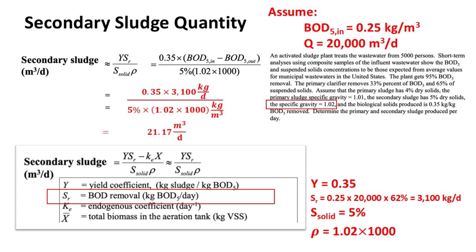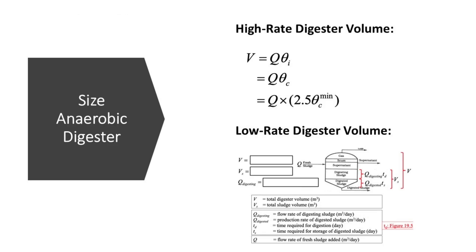Another example covers how to size an anaerobic digester. There are two commonly designed types. The high-rate digester operates in a completely mixed mode; as sludge enters, the mixer instantly blends new and existing sludge, forming a slurry rich in anaerobic microorganisms — this is a completely mixed flow reactor (CMFR), and its volume equals flow rate multiplied by sludge retention time. The low-rate digester is more complex because sludge inside is categorized into digesting sludge and digested sludge with dissimilar characteristics.